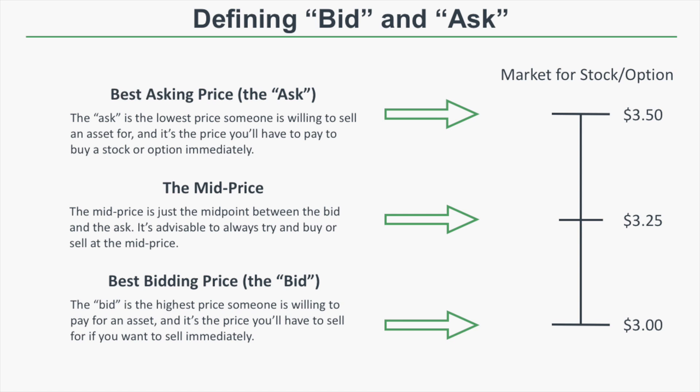The mid price is just the midpoint between the bid and the ask. In this example, the asking price is $3.50 and the bidding price is $3.00, so the mid price would be $3.25. In a market like this with a 50-cent wide bid-ask spread, it's advisable to try to fill your trade near the mid price. If you can't get filled at that price, work towards the ask if you're buying and towards the bid if you're selling.